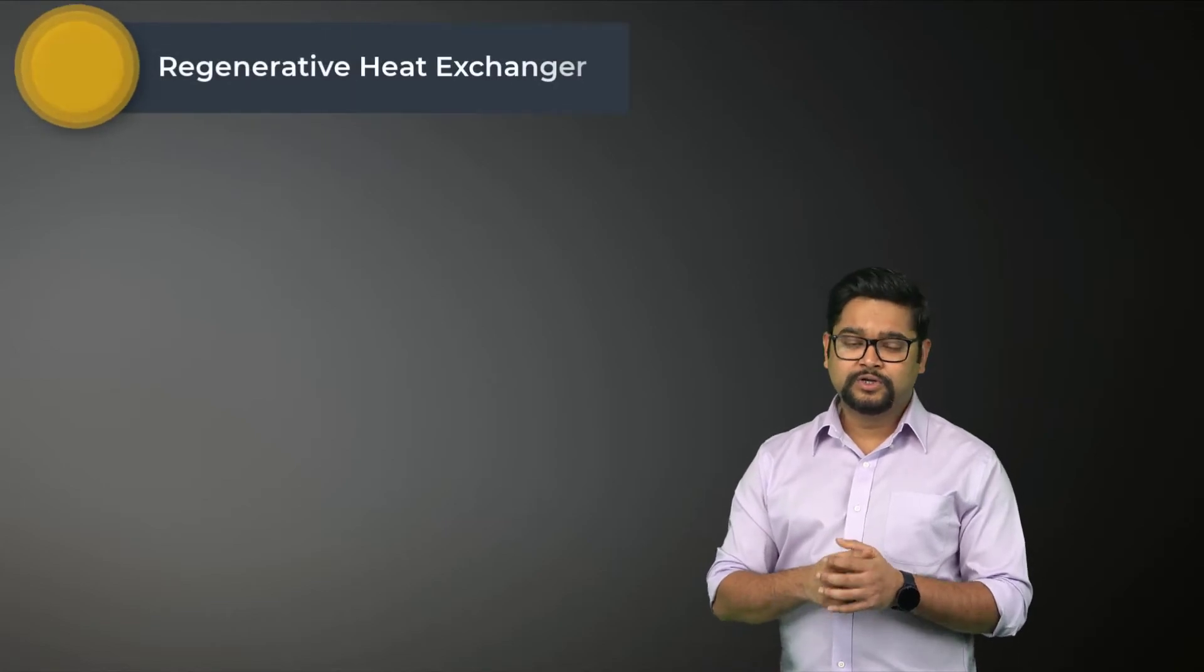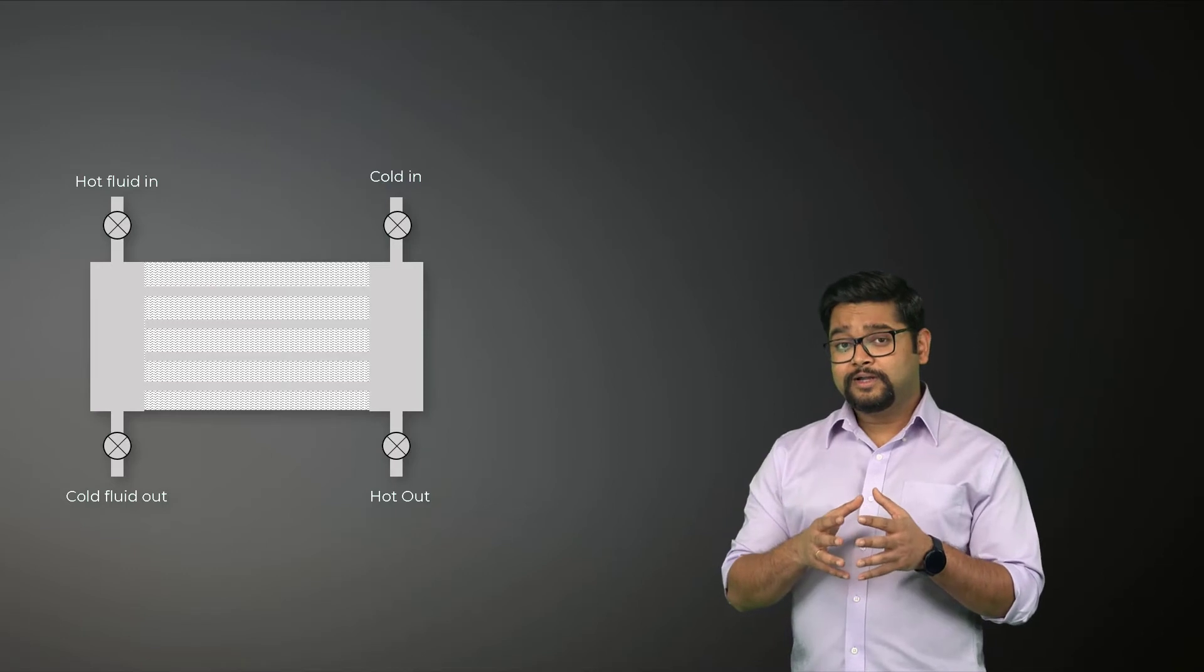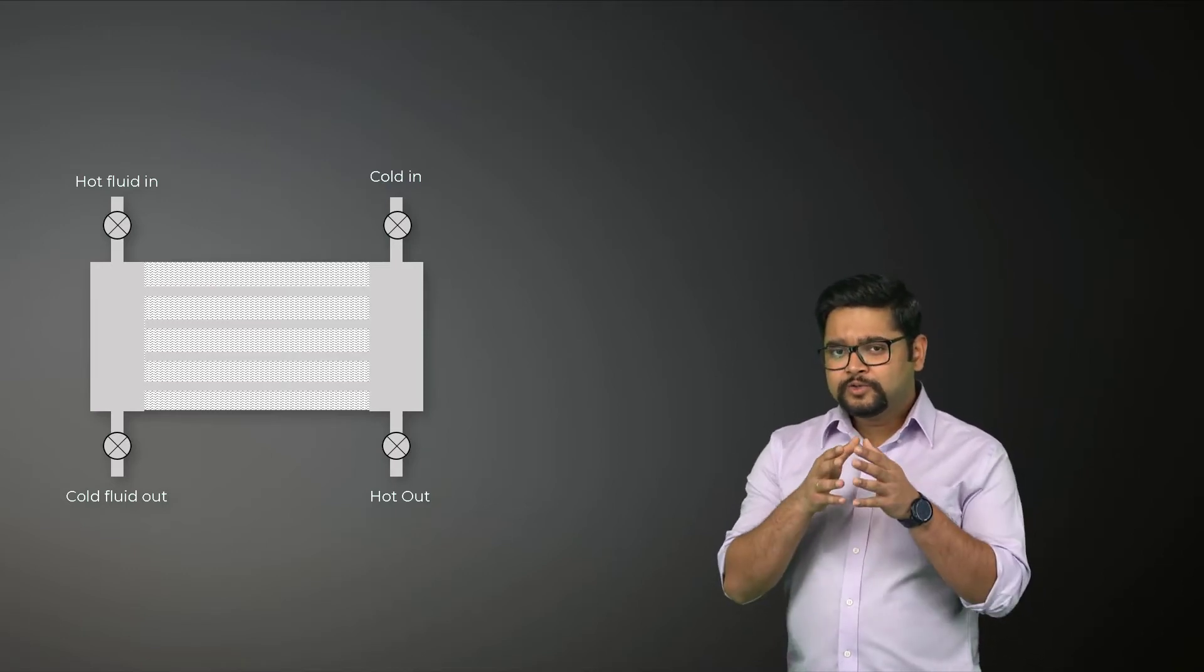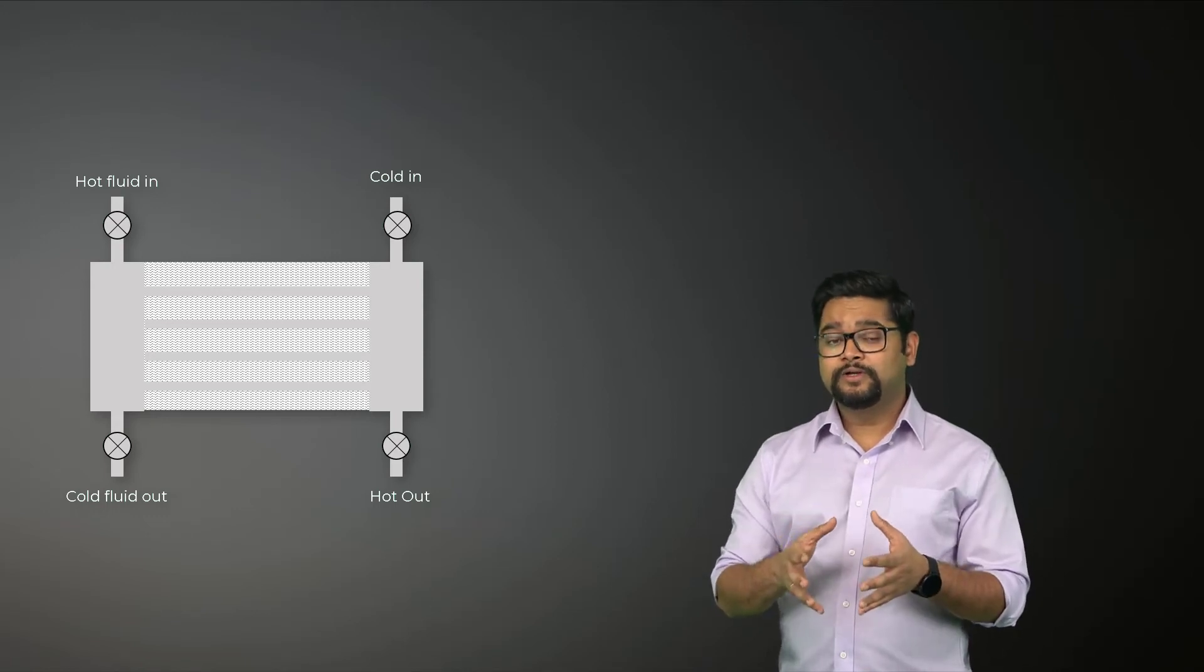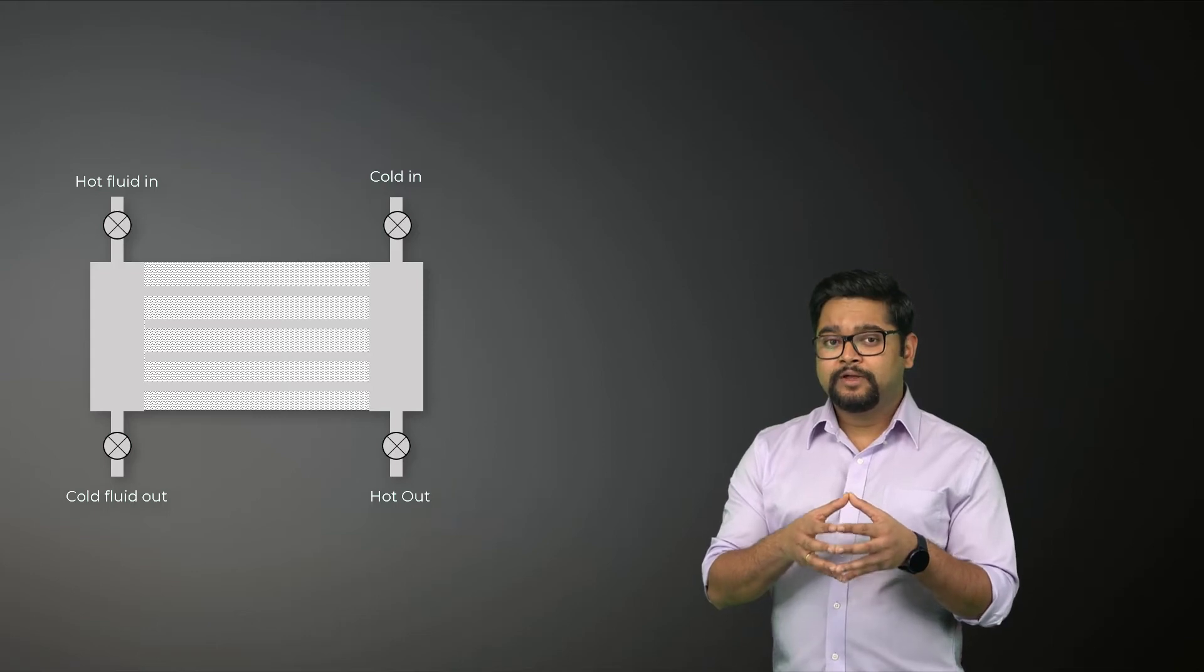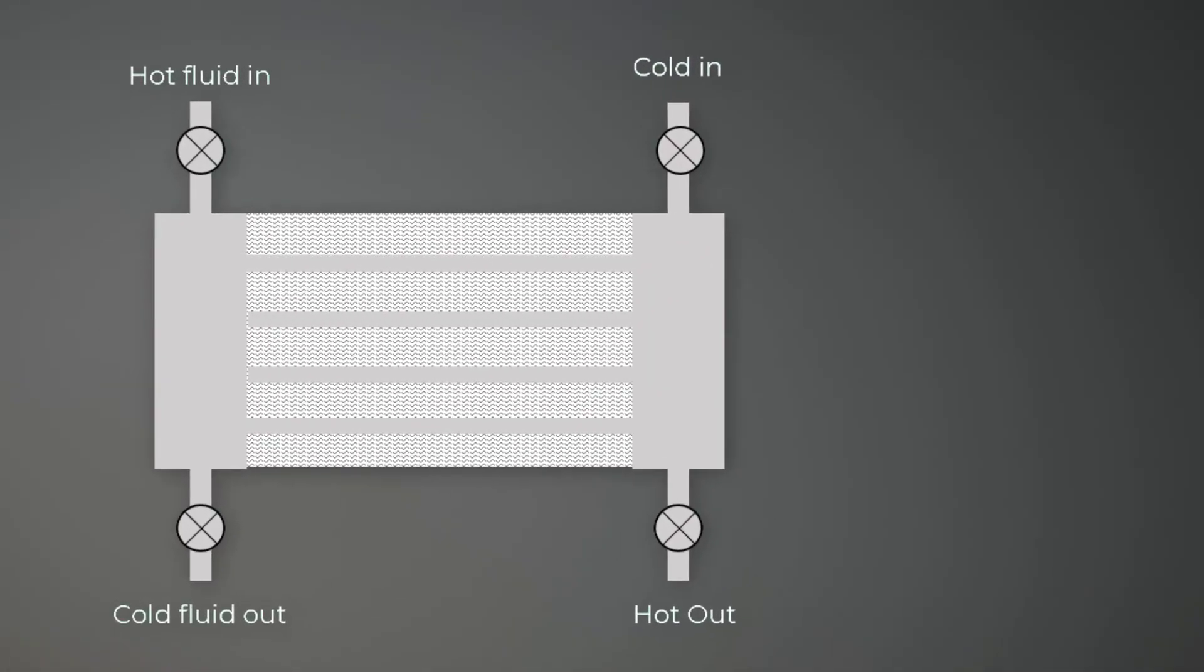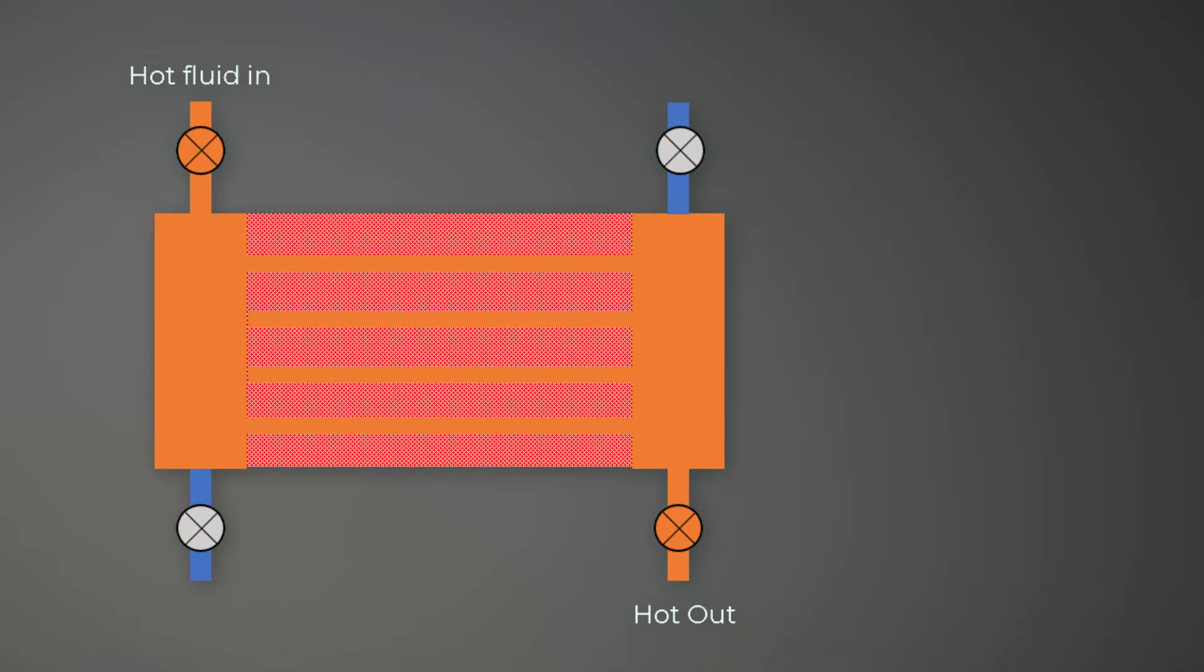Another commonly used heat exchanger in the process industry is a regenerative heat exchanger or regenerator. It involves the alternate passage of hot and cold fluid streams through the same flow area. Heat from the hot fluid is intermittently stored in the thermal storage medium before it is transferred to the cold fluid. To accomplish this, the hot fluid is brought into contact with the heat storage medium. The fluid is then displaced with the cold fluid which absorbs this heat.